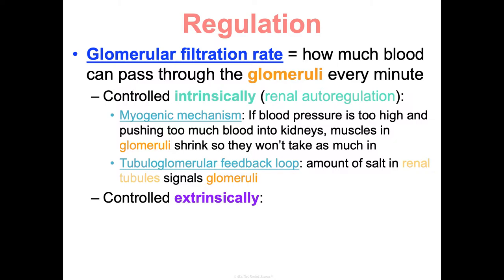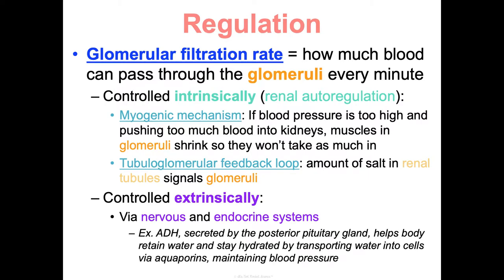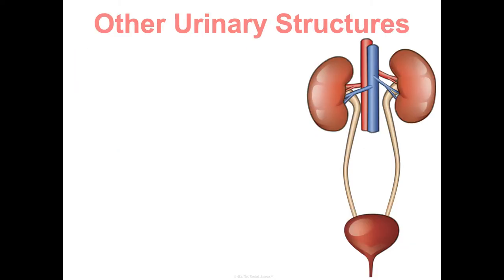Extrinsic control comes via your nervous and endocrine system. For example, ADH — the anti-diuretic hormone — gets secreted by your posterior pituitary gland and helps your body know if it needs to retain water to stay hydrated, transporting water into cells through channels called aquaporins in order to maintain blood pressure.